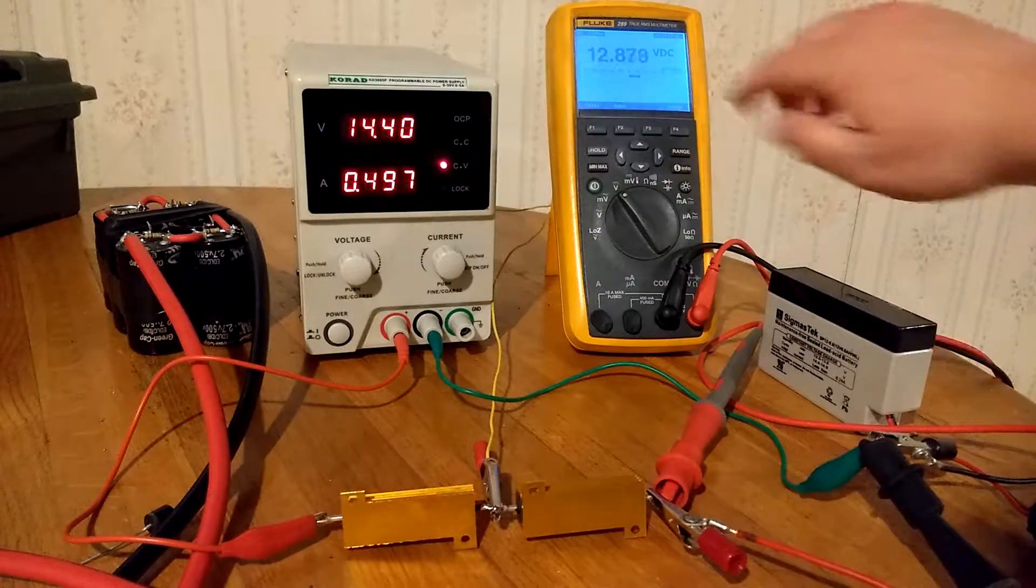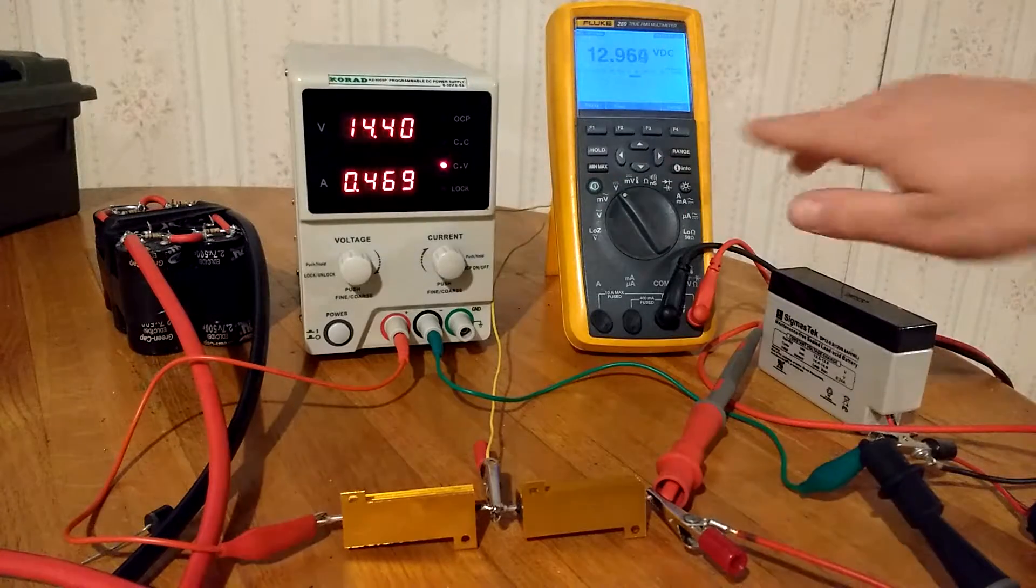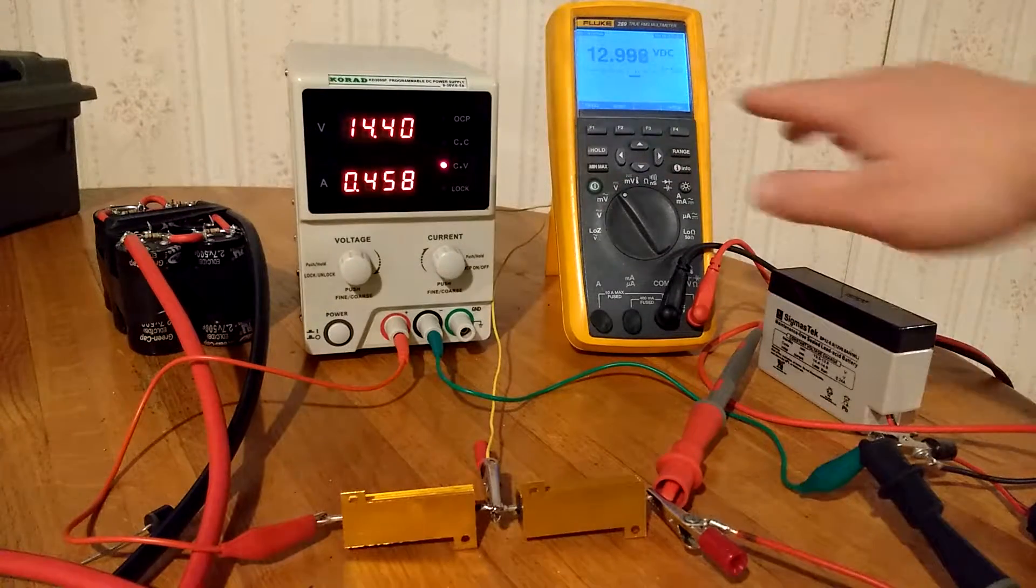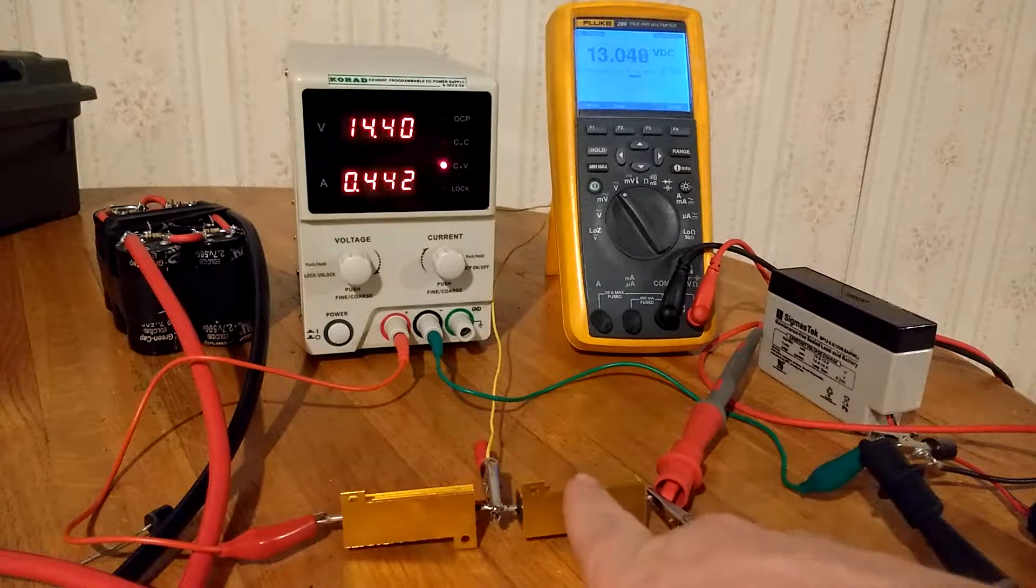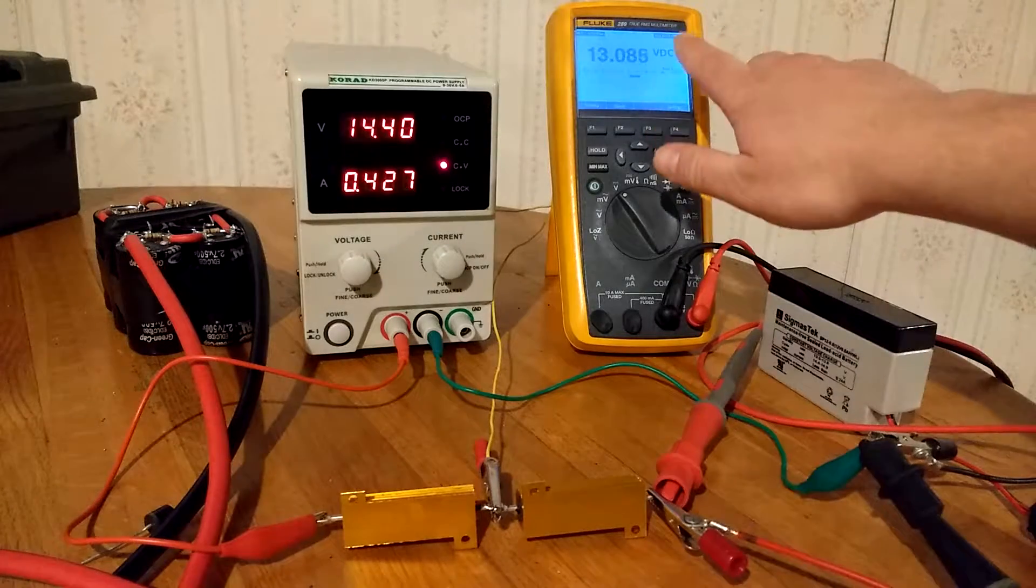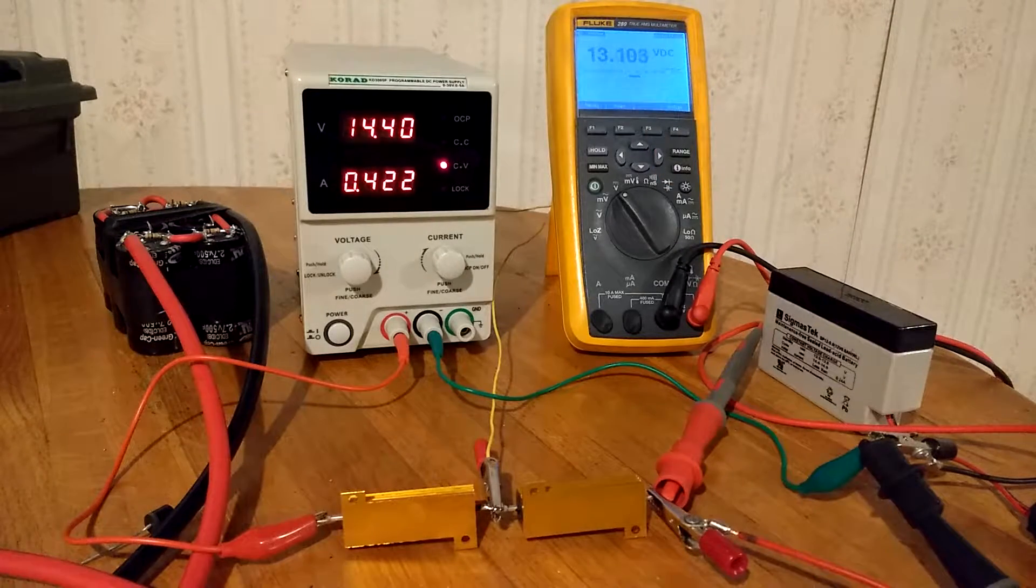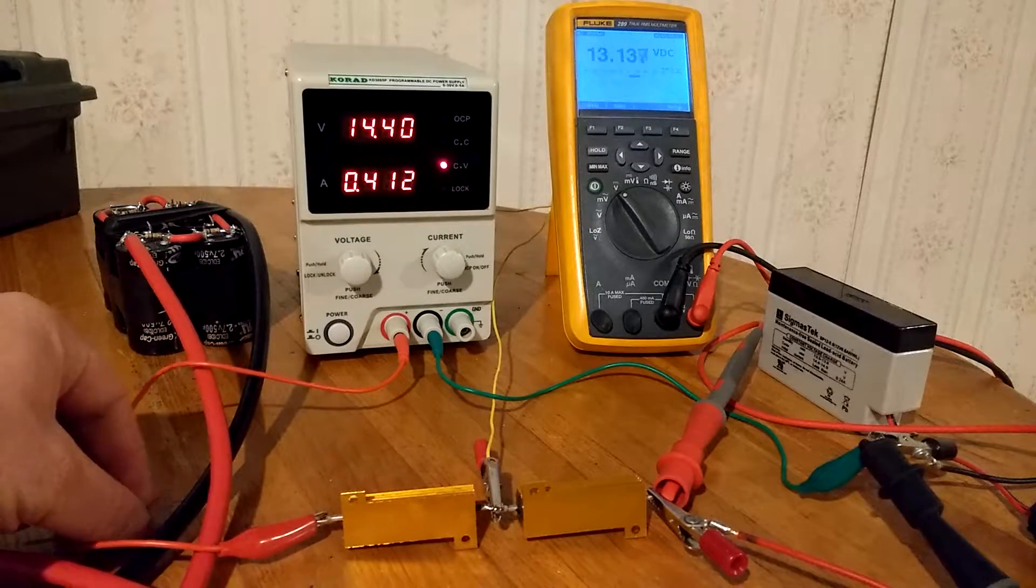And what you can see is I'm actually drawing a half an amp of current and my battery voltage, the power going into the battery is only at 13 volts. I'm getting too much current going through my resistors and it's causing a voltage drop to the battery which is slowing the charging.